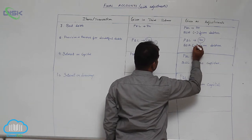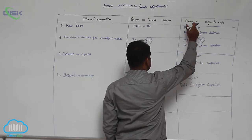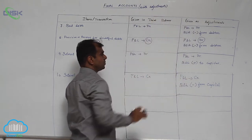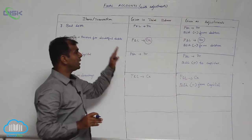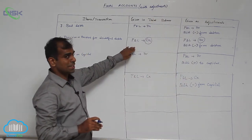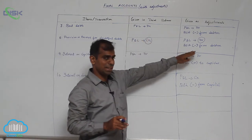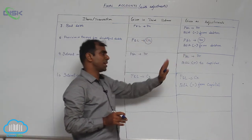Which provision do you deduct? The provision which is given in the adjustment. Do not deduct the provision that is given in the trial balance from the debtors. Never do that.